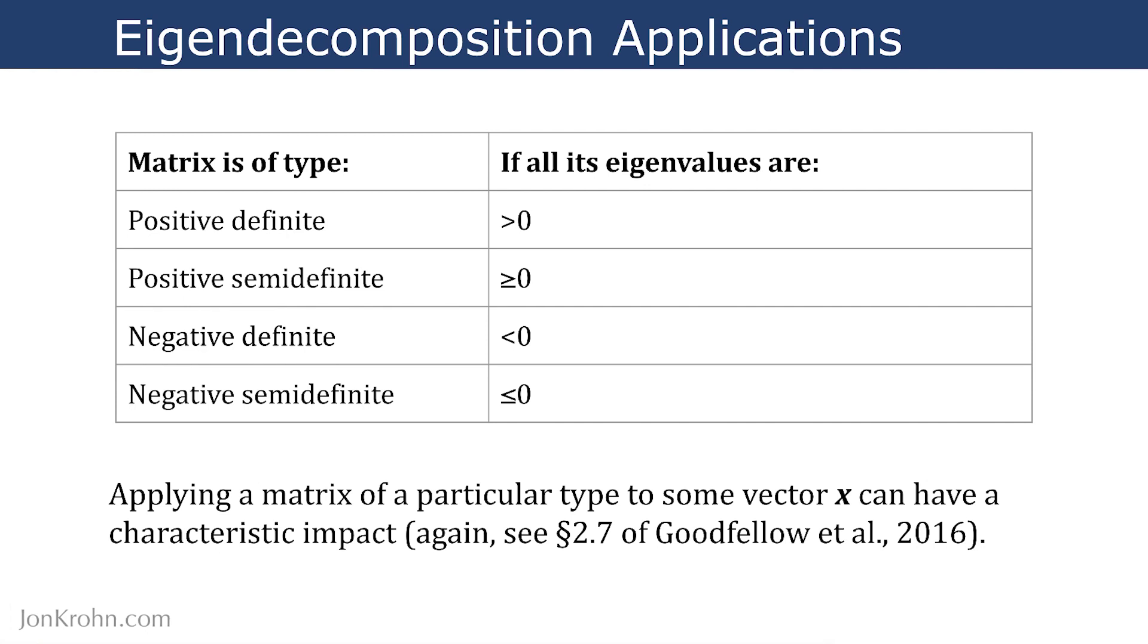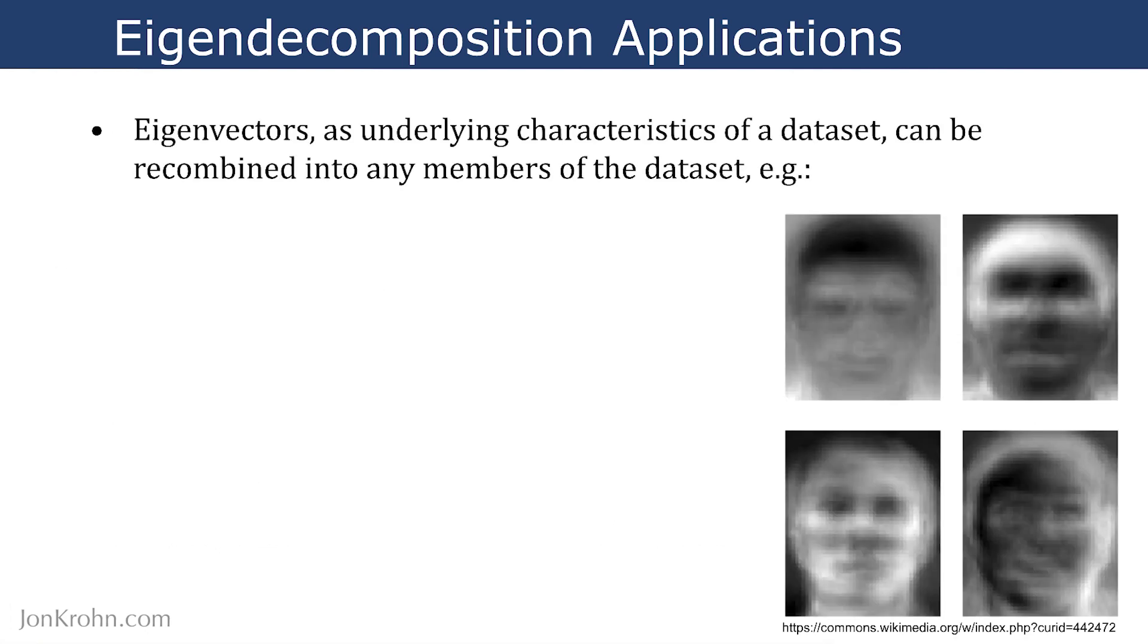But I want you to be aware of these and now let's move on to some very specific real-world applications that are quite tangible. So eigenvectors as underlying characteristics of a dataset can be recombined into any members of that dataset.